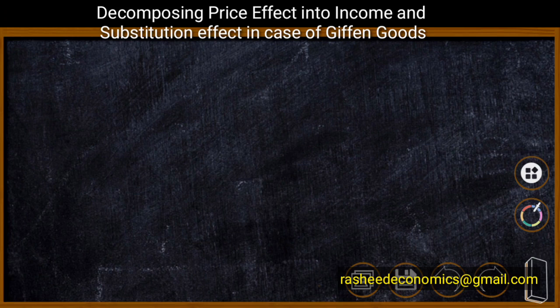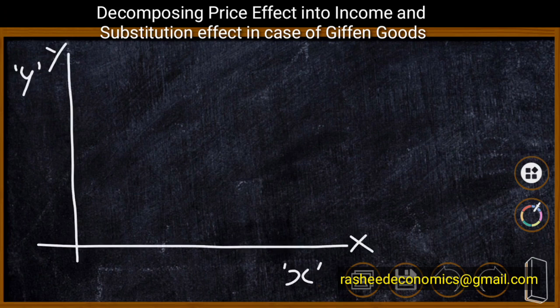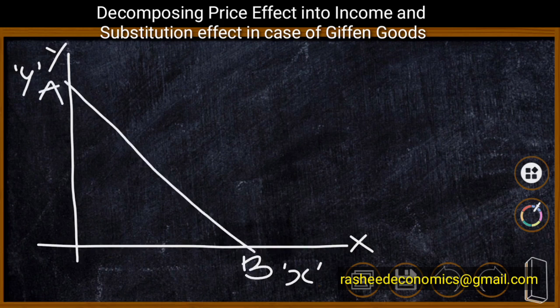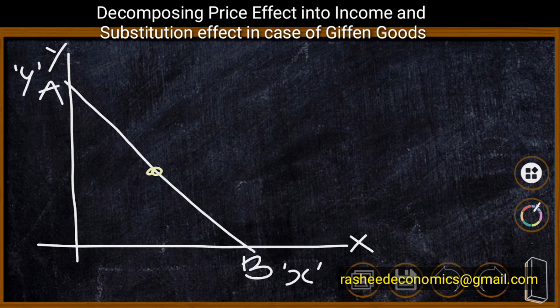Now let us analyze the splitting up of price effect of a Giffen good using a diagram. On the x-axis we have represented product X and on the y-axis we have shown product Y. Initially we have an income-price line AB, and the consumer is consuming at a particular point where the indifference curve is tangent to the income-price line — that is the equilibrium point.